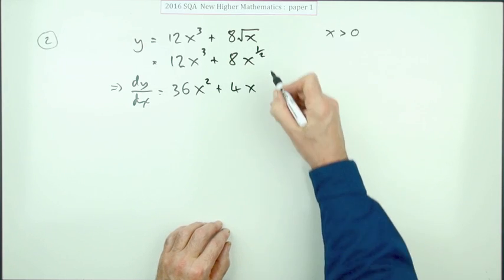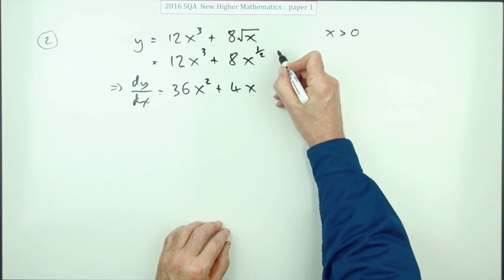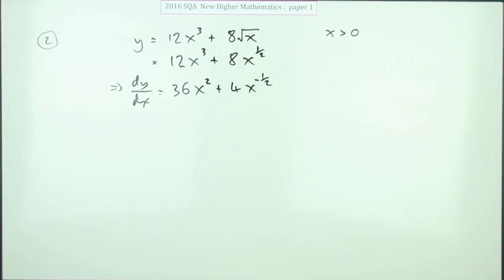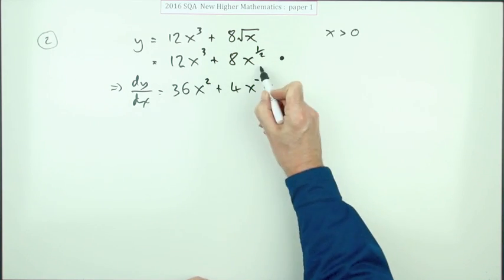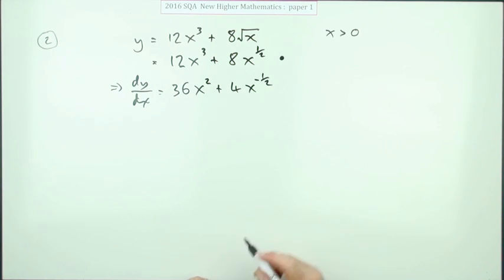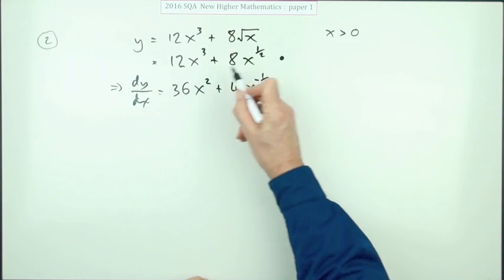A half take away one will be negative a half. And the first mark was for writing it in a form suitable for differentiation, and the next two marks were for each of the parts of the differentiation.